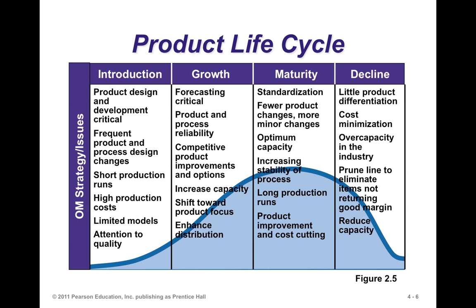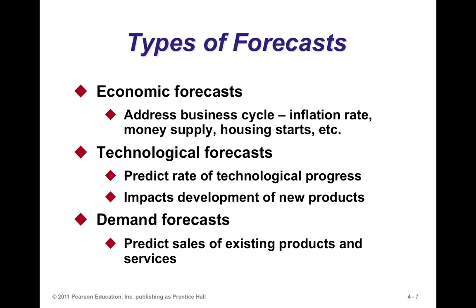In the mature stage, demand is fairly stable, so the techniques you use don't try to project any trend — moving averages, the naive method, exponential smoothing, and tools like that. In the decline stage, there is a downward trend, and you can still use trend models. So the stage of the life cycle certainly influences the techniques that you use.